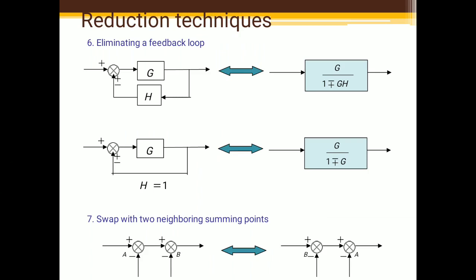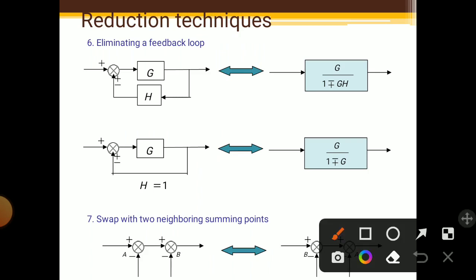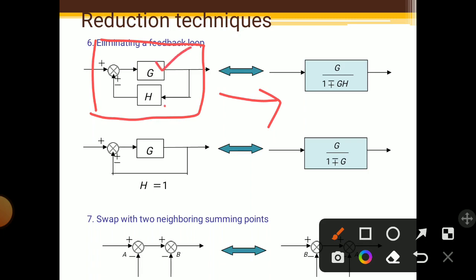Another rule is eliminating a feedback loop. The formula is G upon 1 plus or minus GH. In the numerator we write G, and in the denominator we multiply G into H. If it is a negative feedback loop, we take plus in the formula. If it is a positive feedback loop, we take a negative sign in the formula.